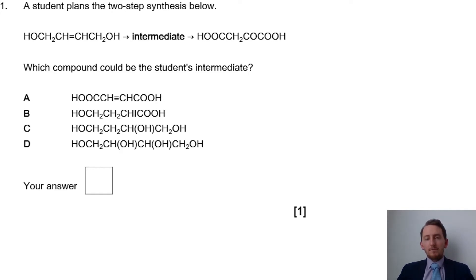This particular question here, the answer is C. The reason being is because the final product needs a ketone in the middle, as well as having the carboxylic acids there, so it's a full oxidation of all three alcohols. So you'd hydrate that alkene first to get the secondary alcohol and then go on from there.